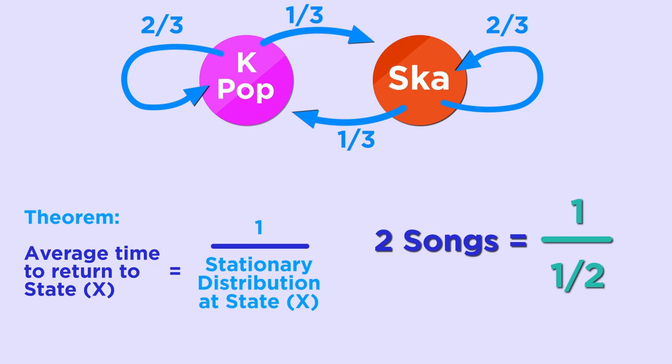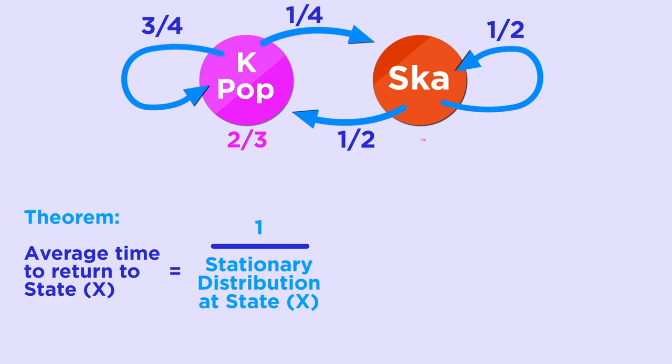What if the radio station decided that people really like K-pop? So they changed the probability transition function, and now it has a three-quarters chance of staying on K-pop. They also lowered the probability it will stay on ska, like this. Then the stationary distribution is different. It plays K-pop two-thirds of the time and ska one-third of the time. Applying that to our theorem, after hearing a K-pop song, you'll now have to wait less time, one and a half songs on average, before hearing another K-pop song, which makes sense.